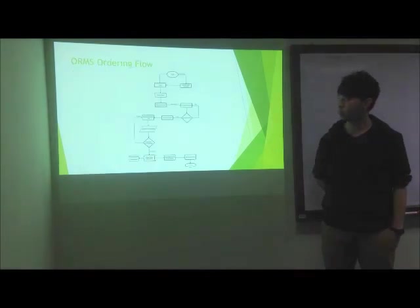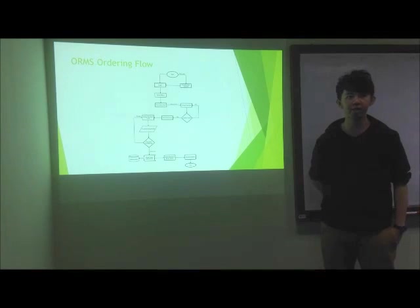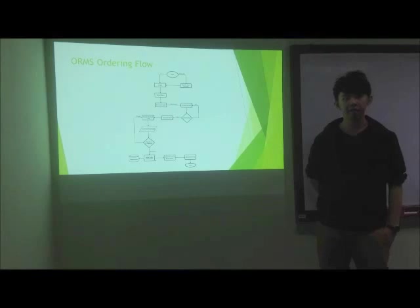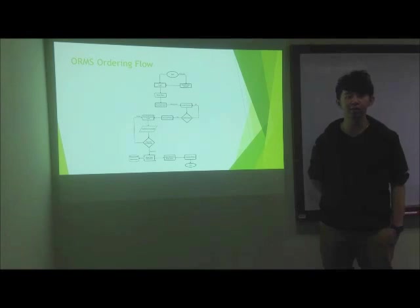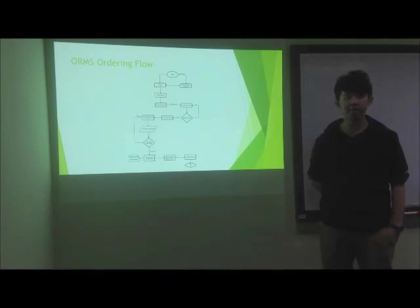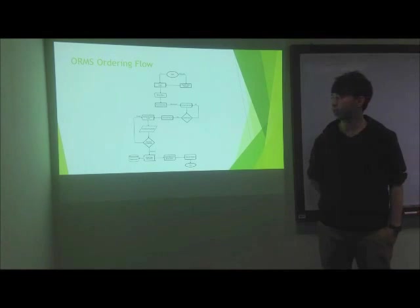This is the ORMS ordering flow. The customer is required to register and log in to the system in order to select a menu. Selected menu items will be added into the cart and ready for processing. If the cart items are correct, the customer needs to fill in the order form and match the payment. Failure to match the payment will cause the order to be invalid. After the payment is done, the order information will be stored into the database. At the same time, the customer will receive an email from the restaurant and the receipt is ready to print and save.